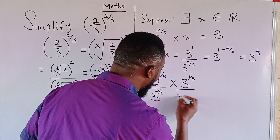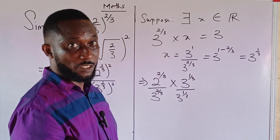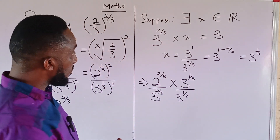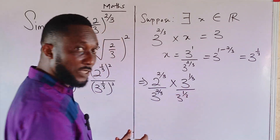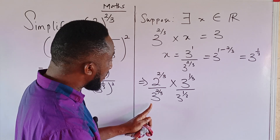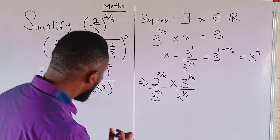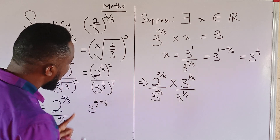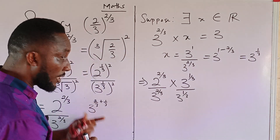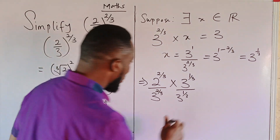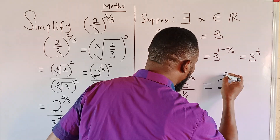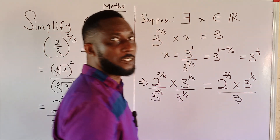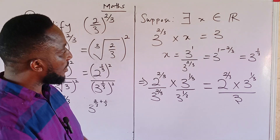To rationalize the expression 2^(2/3) / 3^(2/3), we multiply both numerator and denominator by 3^(1/3). In the denominator, 3^(2/3) multiplied by 3^(1/3) gives 3^(2/3 + 1/3), which equals 3^1 = 3. So we have 2^(2/3) times 3^(1/3) in the numerator, divided by 3. We have successfully rationalized the radical expression.